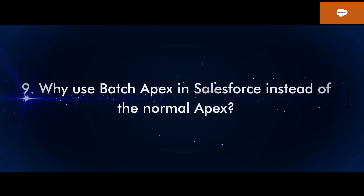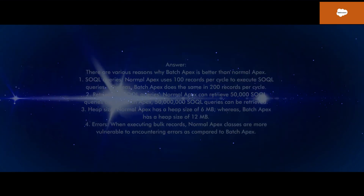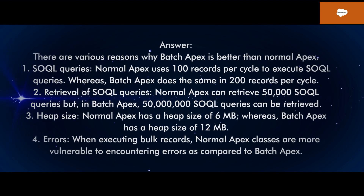Q9: Why use batch Apex in Salesforce instead of normal Apex? There are various reasons why batch Apex is better than normal Apex. 1. SOQL queries: Normal Apex uses 100 records per cycle to execute SOQL queries, whereas batch Apex does the same in 200 records per cycle. 2. Retrieval of SOQL queries: Normal Apex can retrieve 50,000 SOQL records, but in batch Apex, 50 million SOQL records can be retrieved.